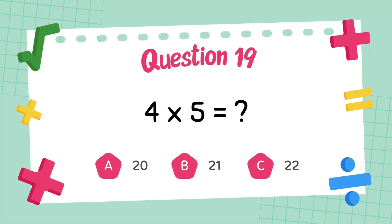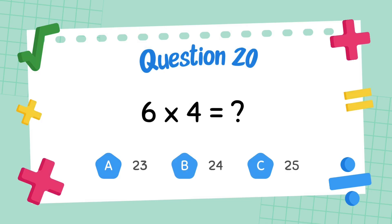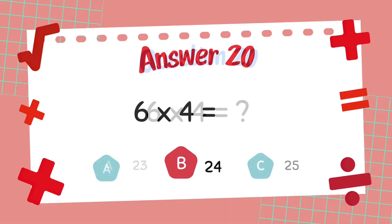What is 4 multiply 5? The answer is 20. What is 6 multiply 4? The answer is 24.